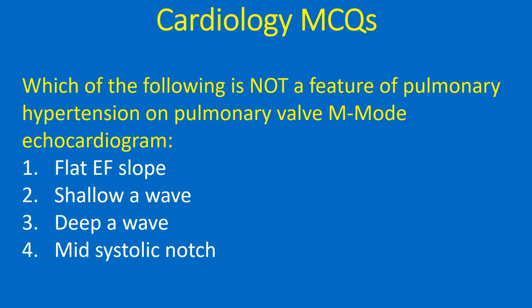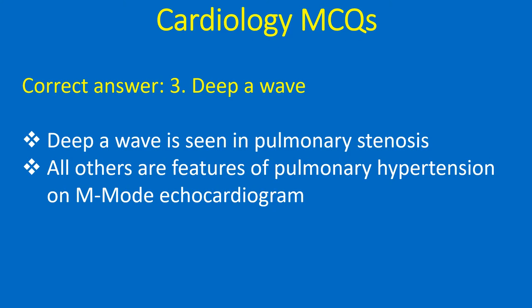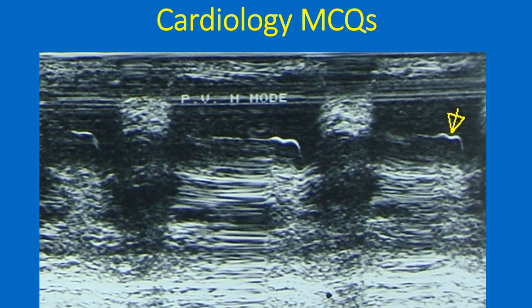Which of the following is not a feature of pulmonary hypertension on pulmonary valve M-mode echocardiogram? 1. Flat EF slope, 2. Shallow A wave, 3. Deep A wave, 4. Mid-systolic notch. Correct answer: 3. Deep A wave. Deep A wave is seen in pulmonary stenosis. All other features — flat EF slope, shallow A wave, and mid-systolic notch — are features of pulmonary hypertension on M-mode echocardiogram.